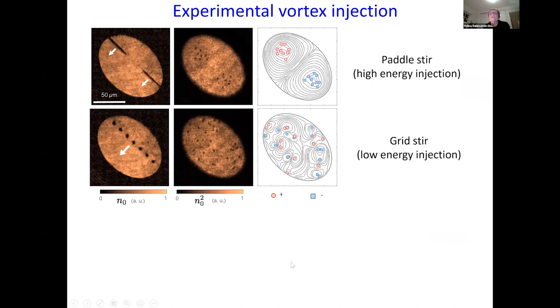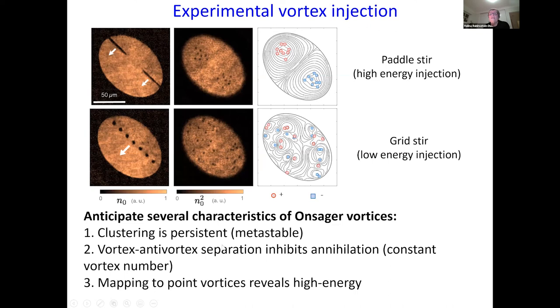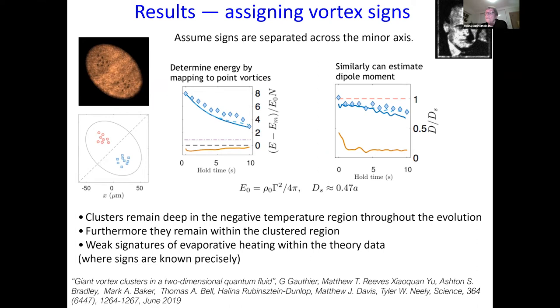We can summarize it. What we have shown, we have shown the clustering is persistent and vortex anti-vortex separation inhibits annihilation and mapping to point vortices reveals high energy. And then we can compare it with the models and assuming that I know the signs, a sign of my vortices, I can compare, determine the energy mapping to point vortices and see how the clusters remain deep in the negative temperature region throughout the evolution.